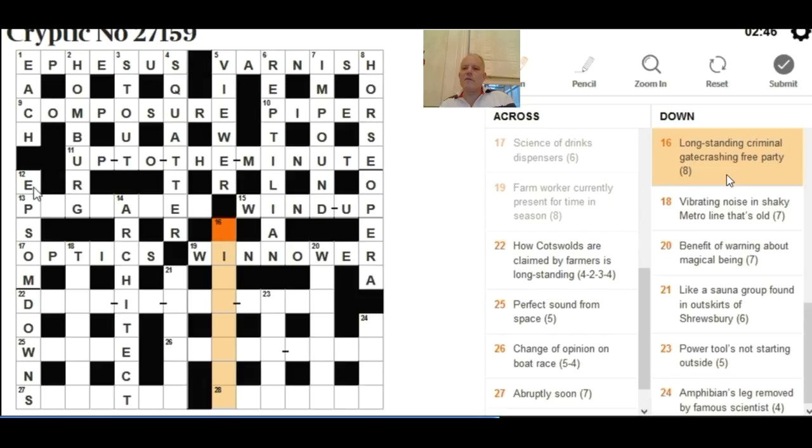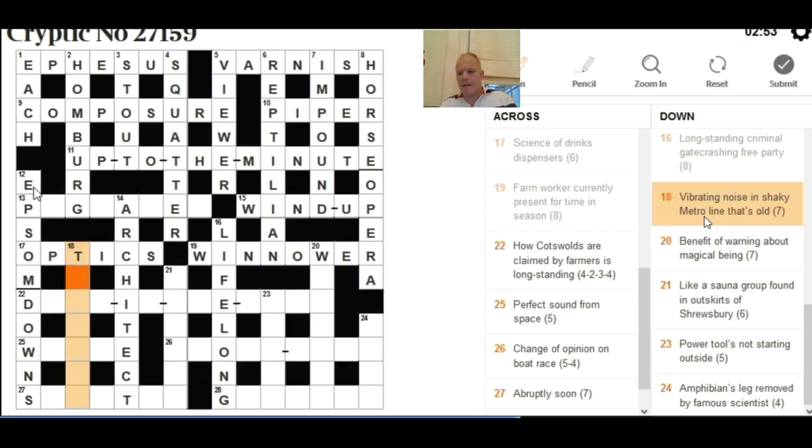Keep moving on the downs. Seventeen down: 'Vibrating noise and shaky metro line that's old.' Shaky - very clear anagram indicator. We need an anagram of METRO then we get L for line and O for old and it all means a vibrating noise. If you know your music or you've done a few crosswords, that's TREMOLO. Next down: 'Benefit of warning about magical being.' Benefit beginning with W in seven letters - I think the fact that it used the word benefit made me think about state benefits and that made me think of the generic word WELFARE. WELFARE works quite well as there's a magical being in it - the ELF - and the warning outside is WEAR.